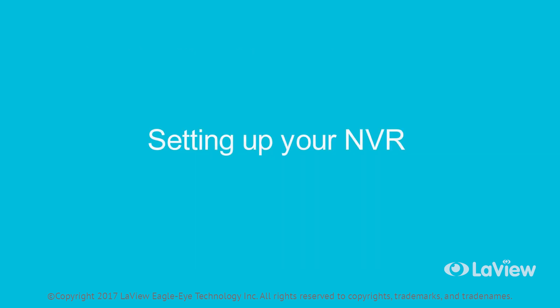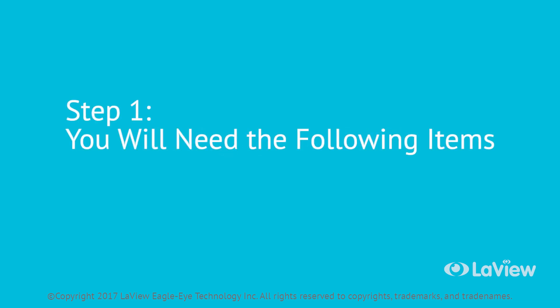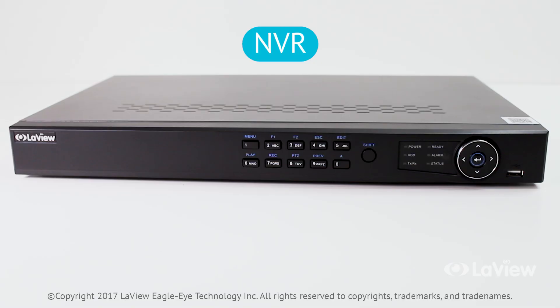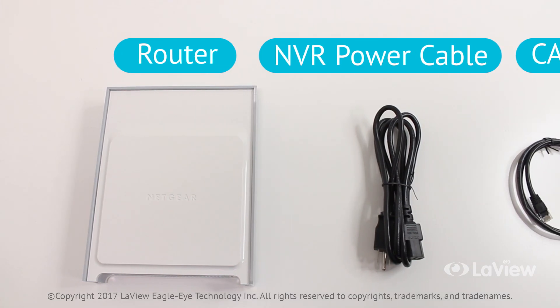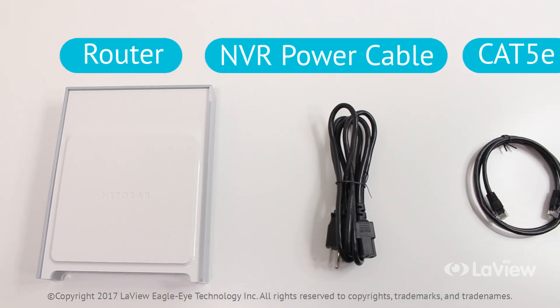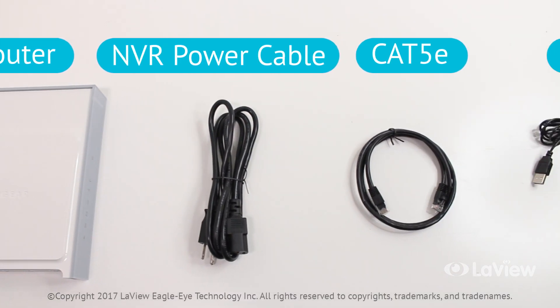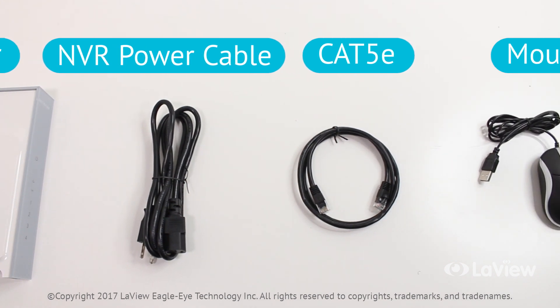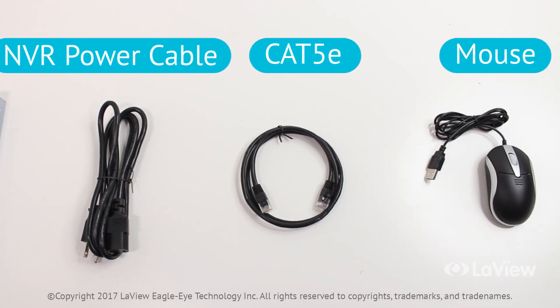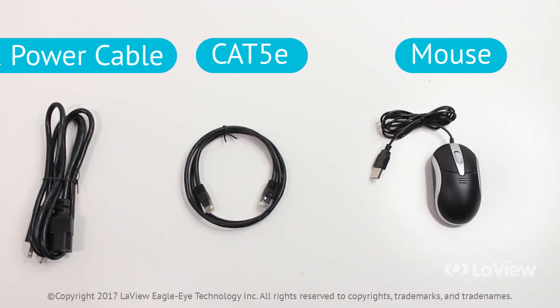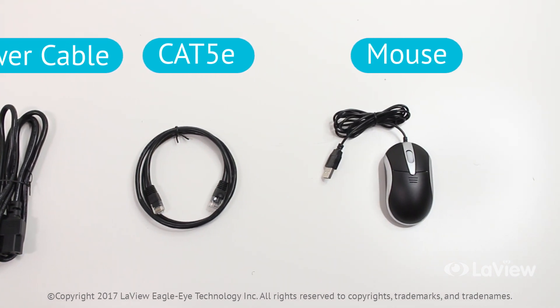Setting up your NVR. Step 1: you will need the following items — your NVR, router, NVR power cable, Cat5 cable, and mouse.